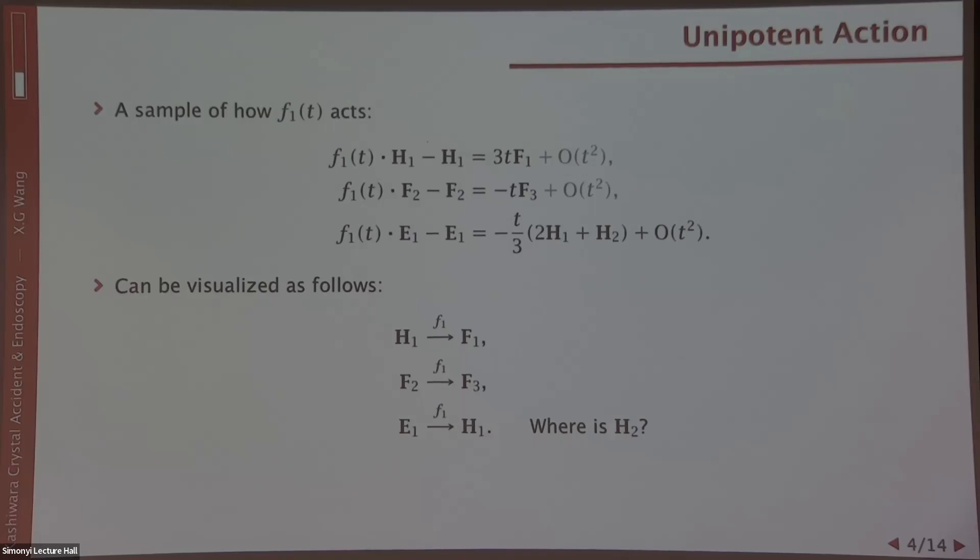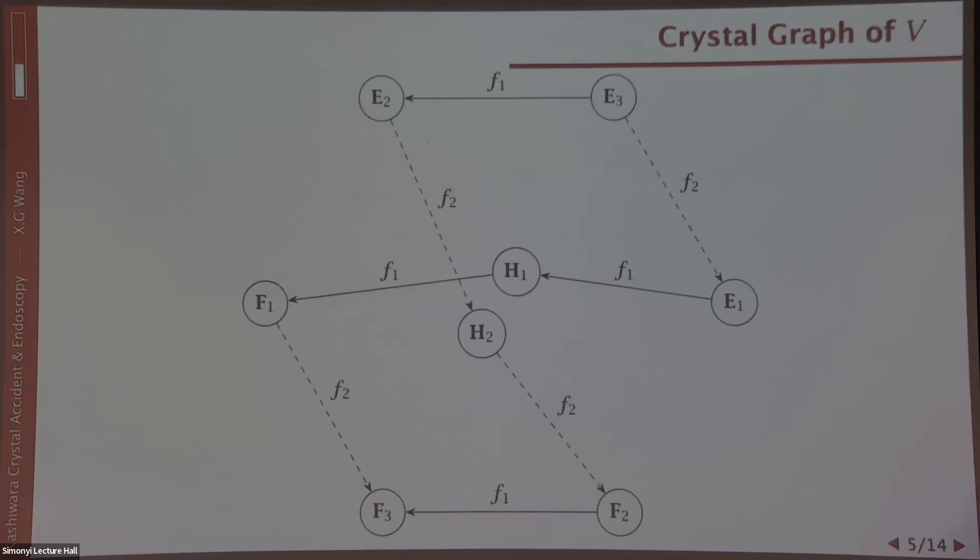When you collect all the results—of course, the EIs and F2 of T can be described similarly—if we collect all the results, these are only the F part. So this is a graph with nodes being the basis vectors and the arrows being the F1 and F2 arrows. This is called the crystal graph of V. We've obtained our first Kashiwara crystal from the representation V.